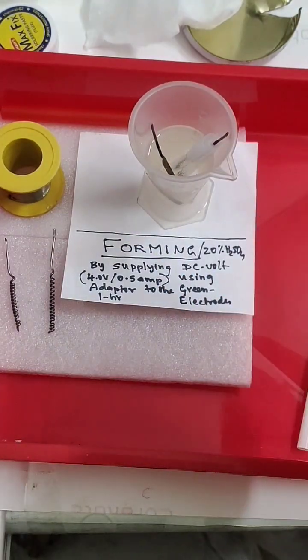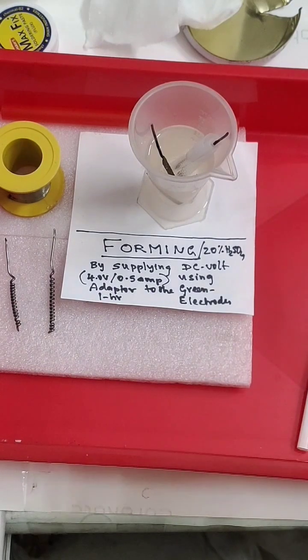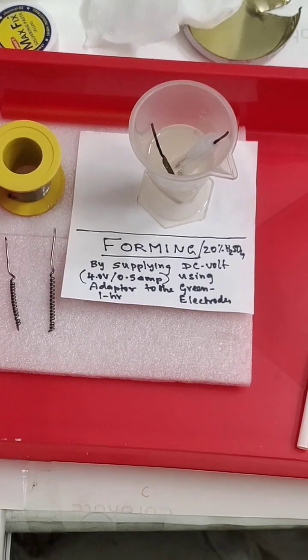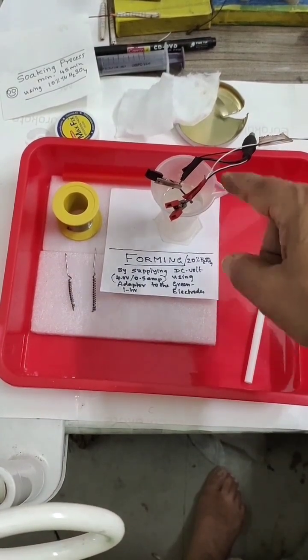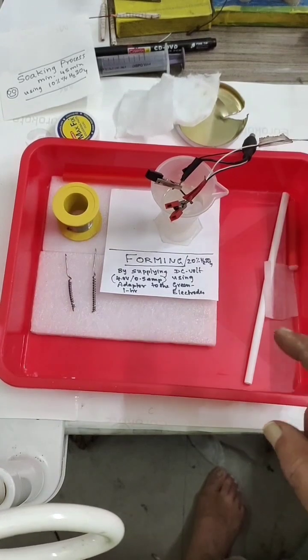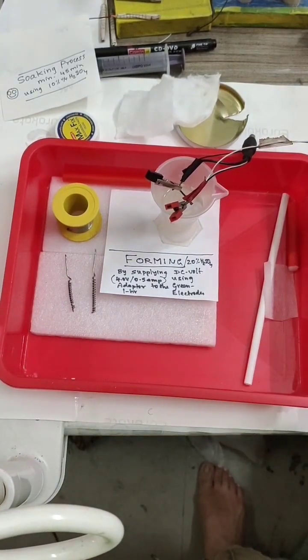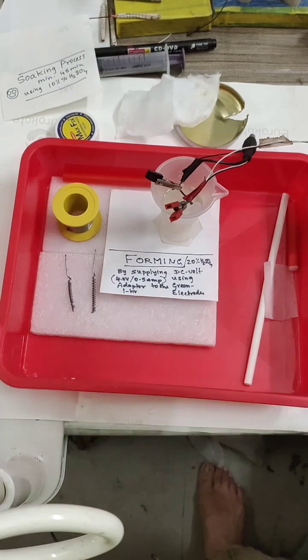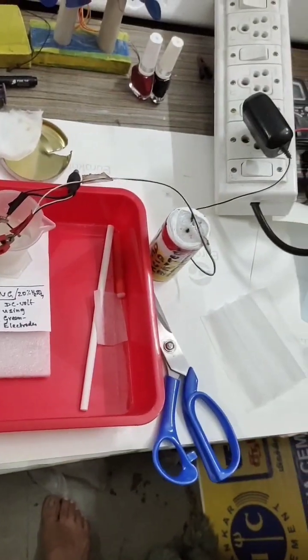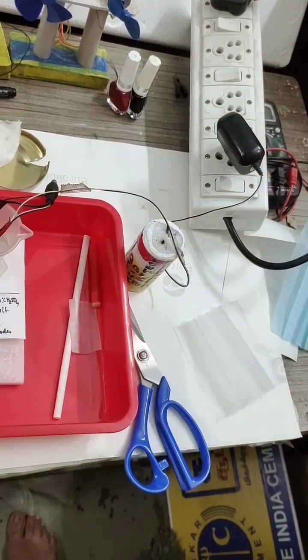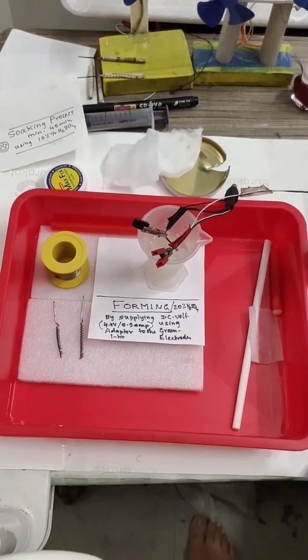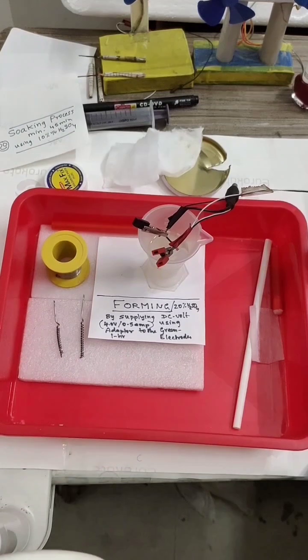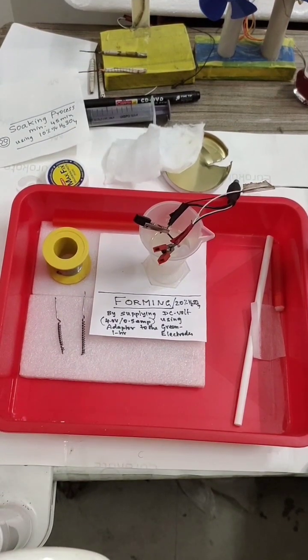So they are now safe, they do not touch each other, that is what is required. Now we will supply external DC voltage. I have connected the positive with the positive electrode, the negative wire with the negative. Now we will start the supply of DC voltage from outside. This is our DC which I have, so I am using 0.5 amps.